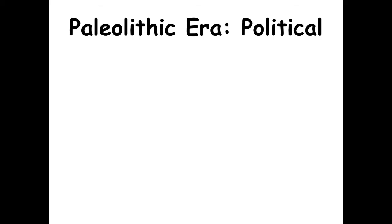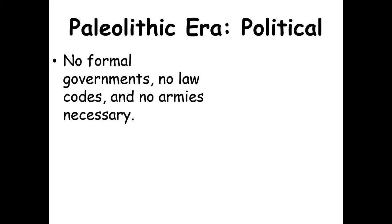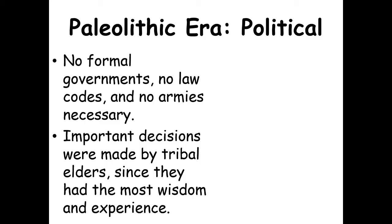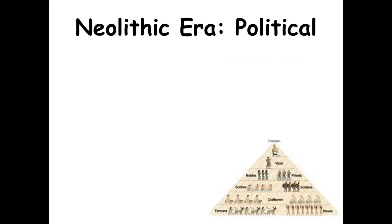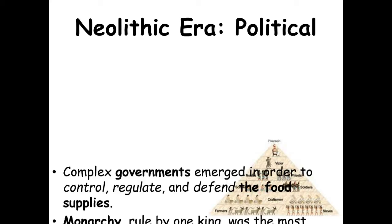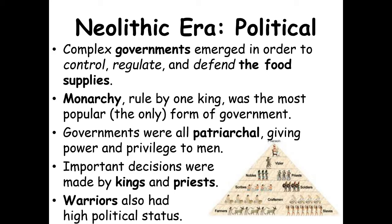Political aspect: In the Paleolithic era, before farming, there were no formal governments, no law codes, no armies. Important decisions were made by tribal elders, who had the most wisdom and experience. In the Neolithic era, complex governments emerged to control, regulate, and defend the food supply. Monarchy — ruled by one king — was the most popular and pretty much the only form of government at the beginning. Governments were patriarchal, giving power and privilege to men. Important decisions were made by kings, priests, and warriors, and those who protected the food also had high political status.